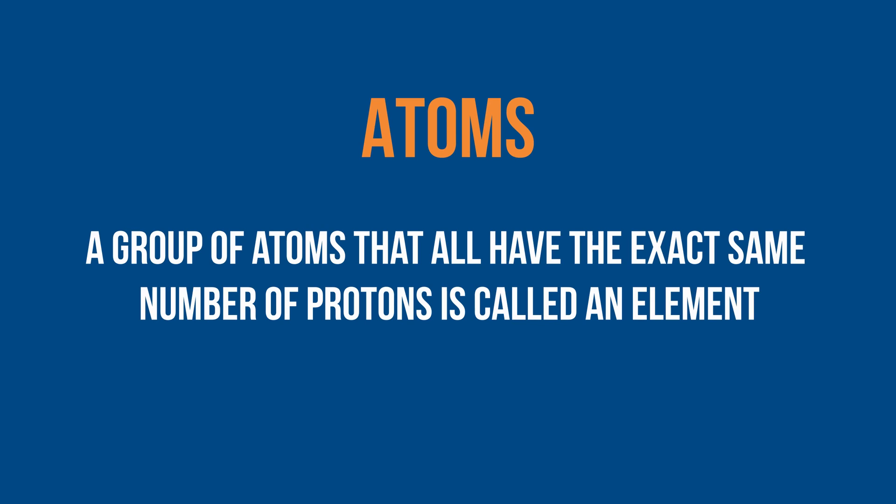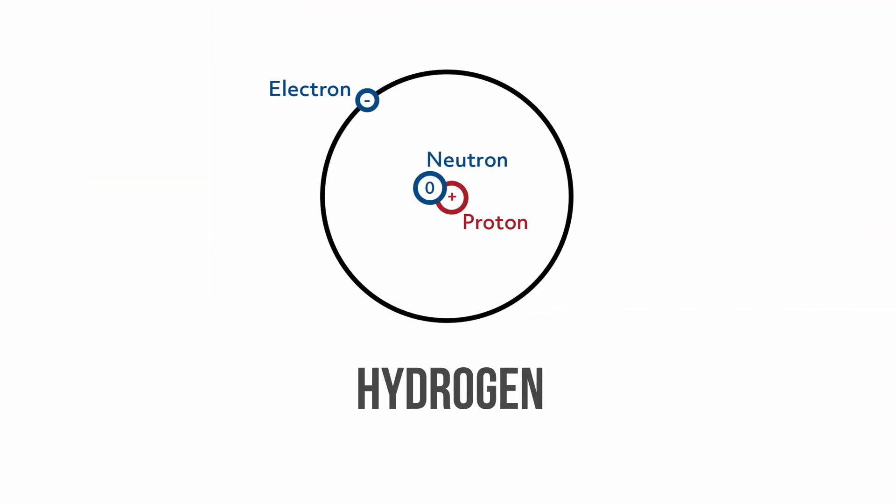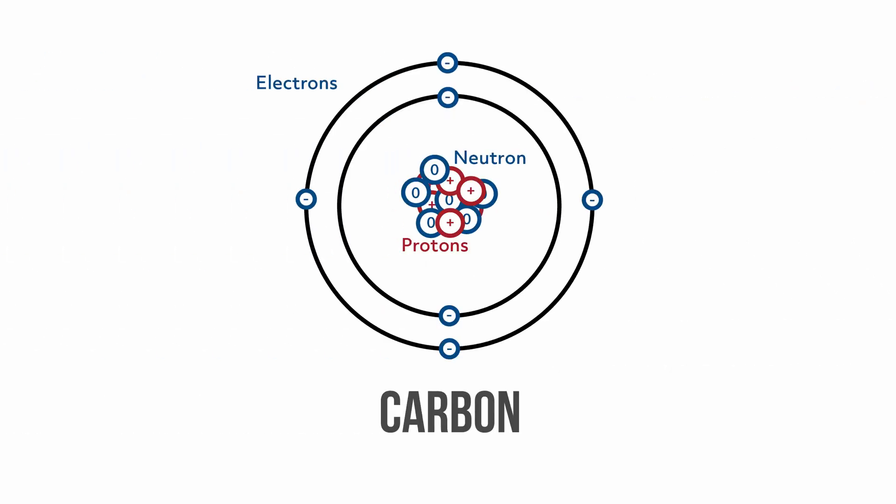Atoms can have just one proton, or they can have multiple. A group of atoms that all have the exact same number of protons are called an element. For example, hydrogen is an element with one proton in the nucleus, and carbon is an element with six protons.